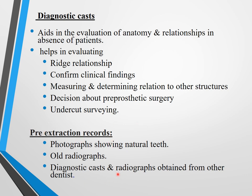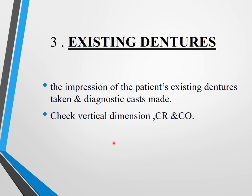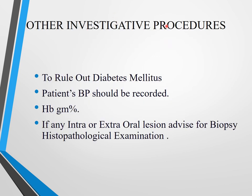Pre-extraction records are very important if available, though patients rarely bring them. They include photographs showing natural teeth, old radiographs, diagnostic casts, and records from other dentists. The most practical method is using the patient's existing dentures — taking an impression of them, making a diagnostic cast, and checking vertical dimension, centric relation, and centric occlusion.